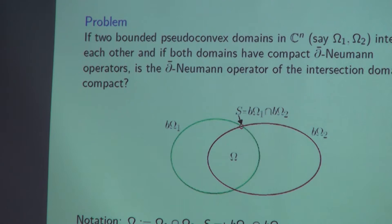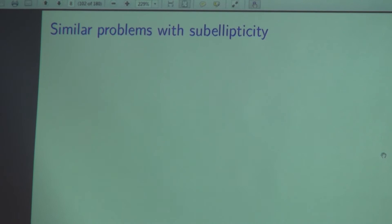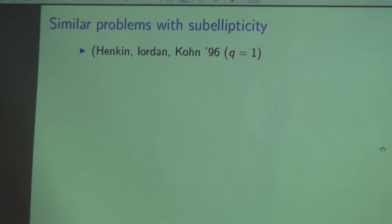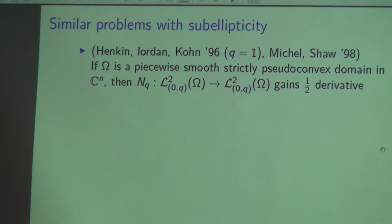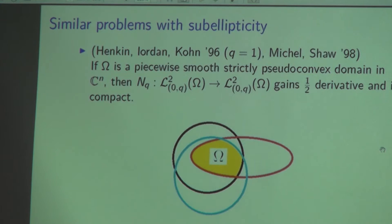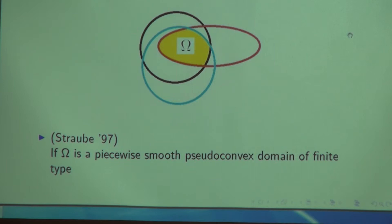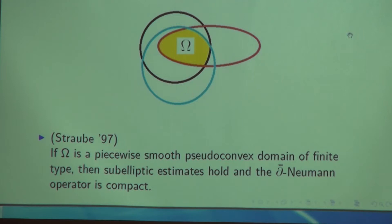Hanken, Jordan, and Kohn looked at the same problem when the form level Q equals 1. Michel and Shaw in their 1998 paper looked at omega when omega is a piecewise smooth strictly pseudoconvex domain — so the intersecting domains are pseudoconvex — but they asked a different question, showing the D-bar Neumann operator gains half a derivative and is compact. My advisor Straube looked at the same question but assumed omega is given by a piecewise smooth finite type domain, and proved that subelliptic estimates hold and the D-bar Neumann operator is compact.